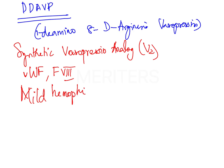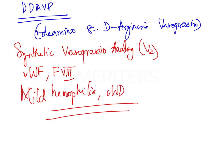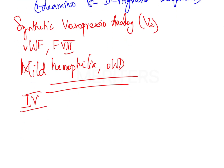Desmopressin can be administered intravenously. Plasma levels of von Willebrand factor are increased to two to four times above baseline within 30 minutes of administration of DDAVP. It can also be given subcutaneously.